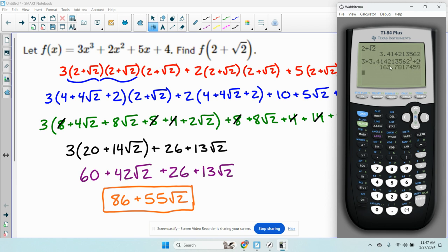So the answer is 163.7817. So let's see if we get the same thing here. 86 plus 55 times the square root of 2. And we get the exact same thing.